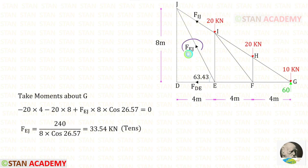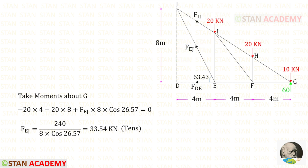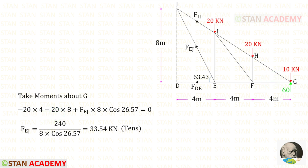To find FeJ easily, we have to take moment about G. When we take moment about G, we should not consider 60, 10, Fde, and FiJ. The remaining forces are 20, 20, and FeJ. Both of these two loads are acting in the anticlockwise direction, so both of them will be negative. For this load the distance is 4, and for this load the distance is 8.